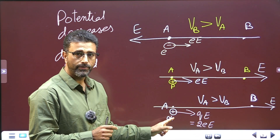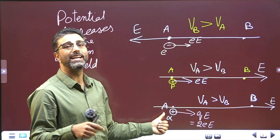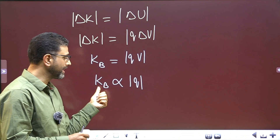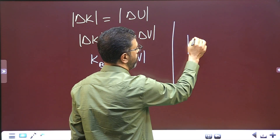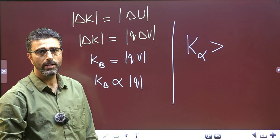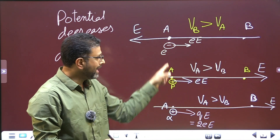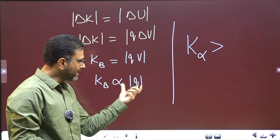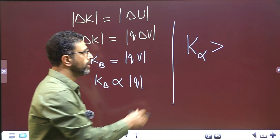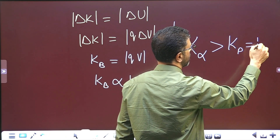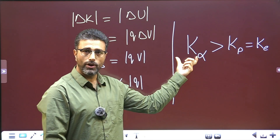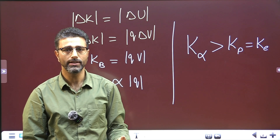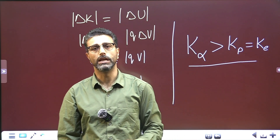Out of the three particles, the alpha particle has the greatest charge — 2e. So the alpha particle will gain the maximum kinetic energy at B. The proton and the electron both have the same magnitude of charge: 1.6 × 10⁻¹⁹ C. So their kinetic energies at B will be equal. Therefore: kinetic energy of alpha particle is greatest, then kinetic energy of proton equals kinetic energy of the electron. That's what we are asked to find in this question.